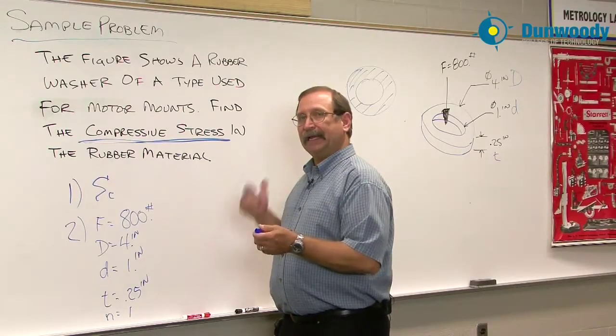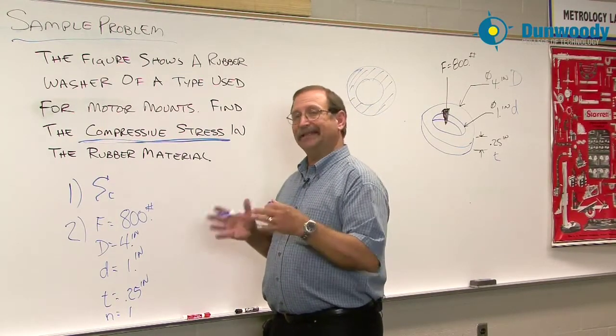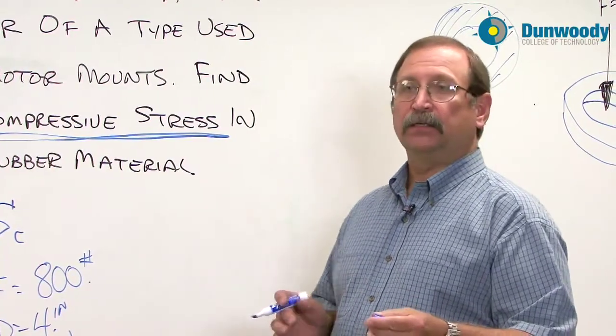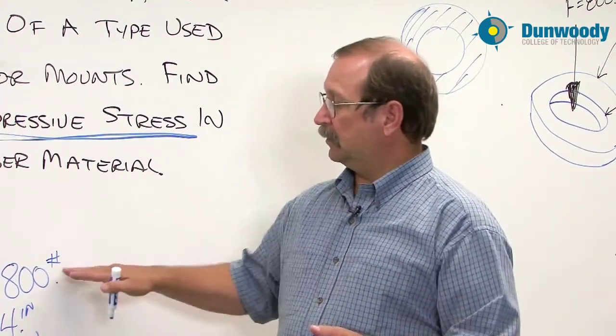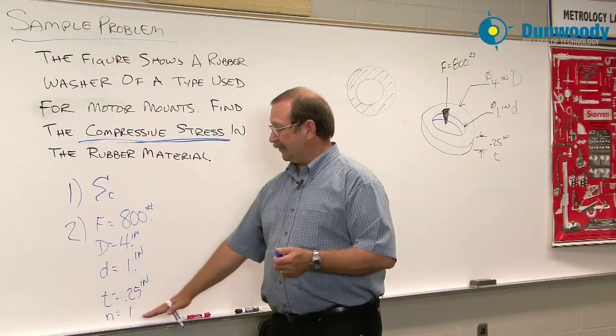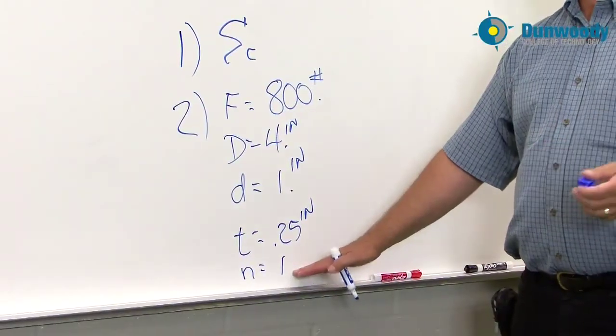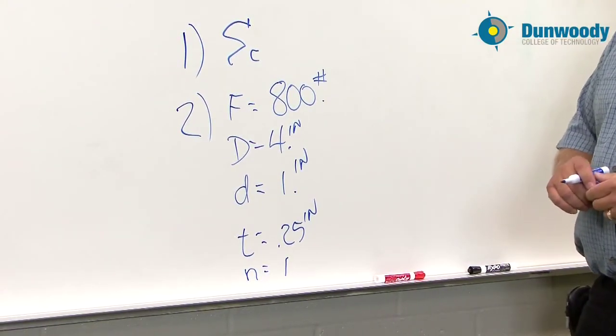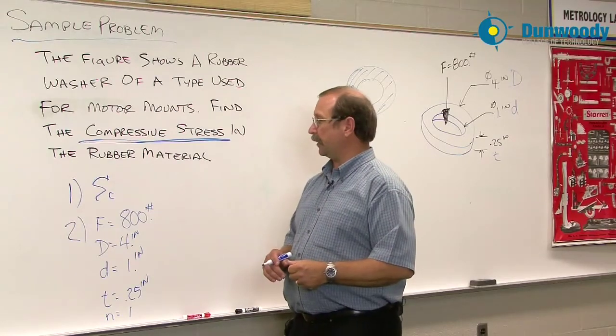Now if I really had a motor that I was working with here, that 800 pounds might be the whole weight of the motor. Or in this case, it might be one fourth of the weight of that motor. So if I put the full weight on the area, this would be four times larger. And then I would put the number of areas would be four. So we'll do something like that on a following problem. Right now we're just going to take a look at the force acting on one particular area.